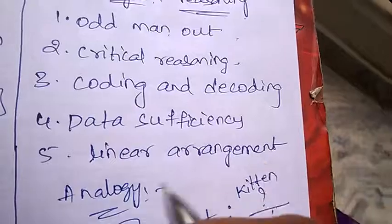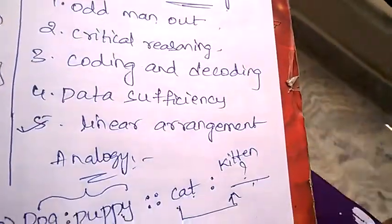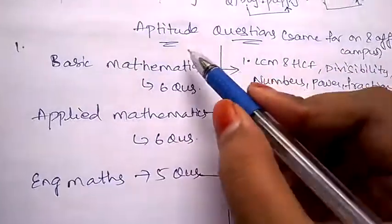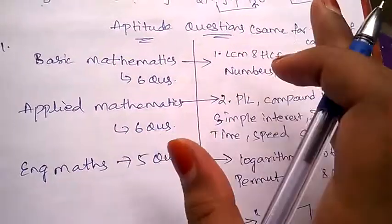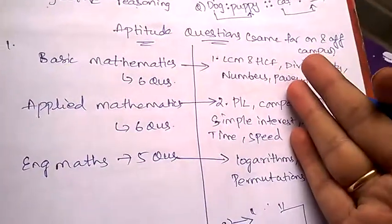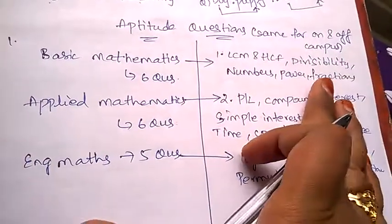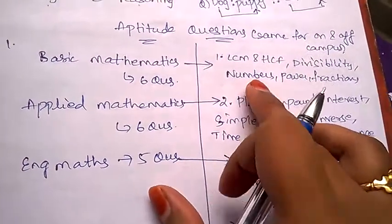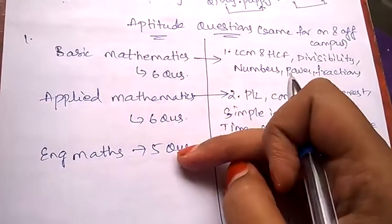Questions will be asked on data sufficiency and linear arrangement. Linear arrangement is a little bit tough, so concentrate more on linear arrangement. Now let's see the aptitude questions. Coming to aptitude syllabus, it is the same for both on-campus and off-campus. Let's see what is the syllabus for quantitative aptitude under Accenture.